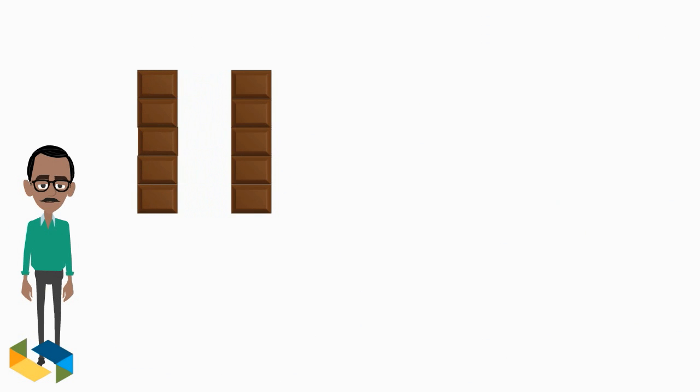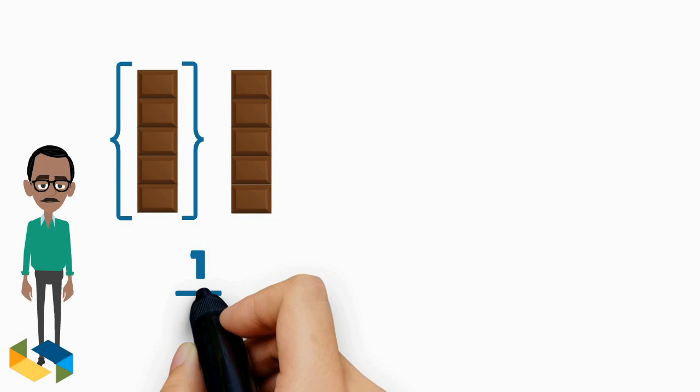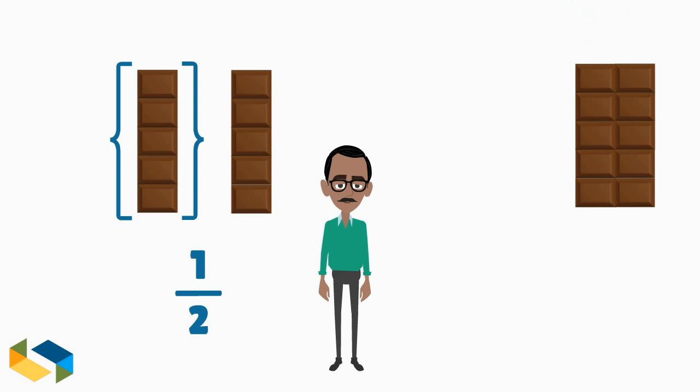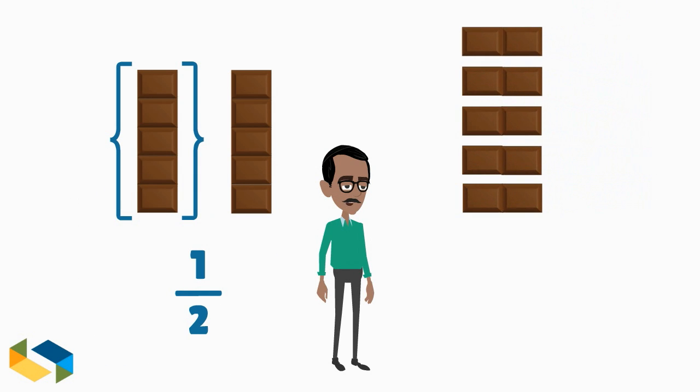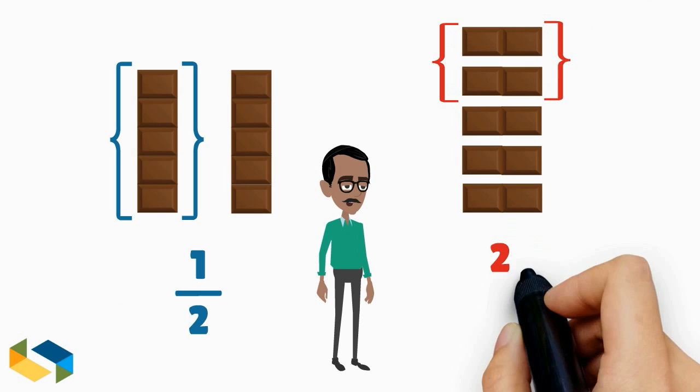Here we make two parts and count one part to represent the fraction 1 upon 2. Out here, we make five parts. Two of these make the fraction 2 upon 5.